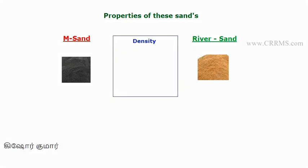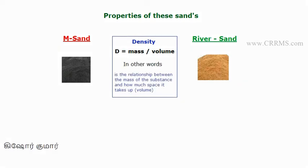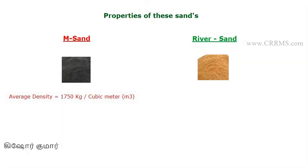The main thing to discuss is density. Density is mass or weight divided by volume — in other words, density is the relationship between the mass or weight of a substance and how much space it occupies, or its volume. Keeping this in mind, let's see what the average density of M sand is.